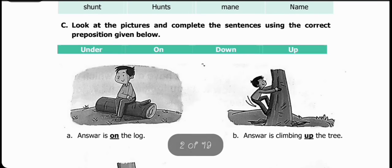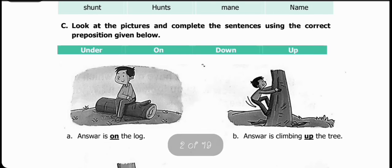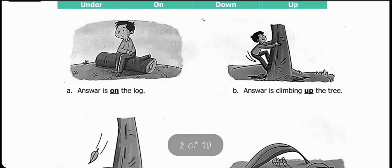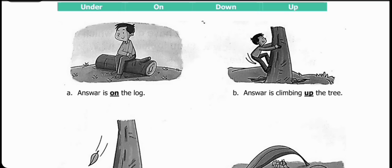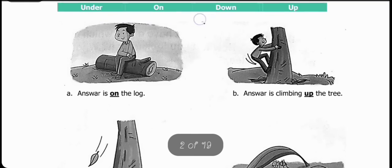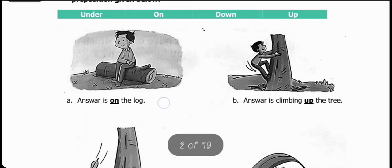Under means niche (below), on means upar, down means niche, up means upar. First one is: Anwar is blank the log. Which answer will we use from here? On. Anwar is on the log. Log kisko kehte hain? The trunk of a tree is called a log.